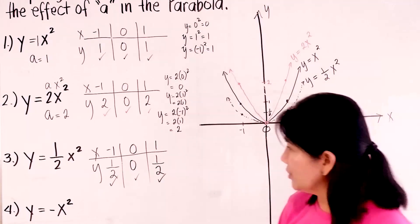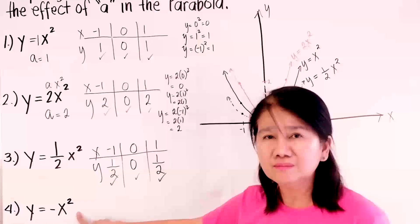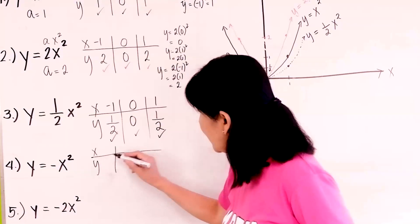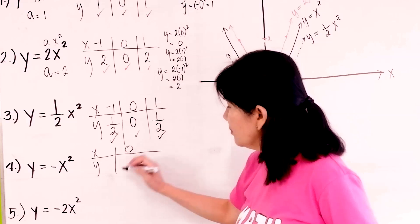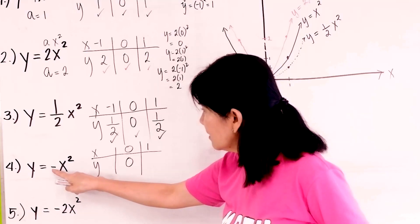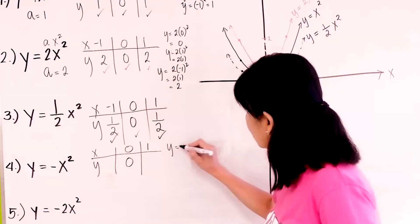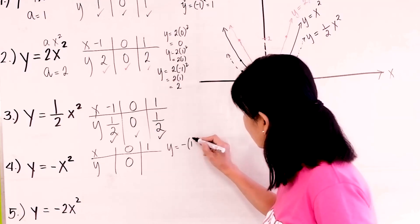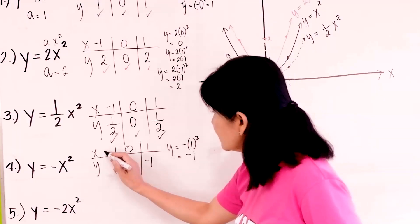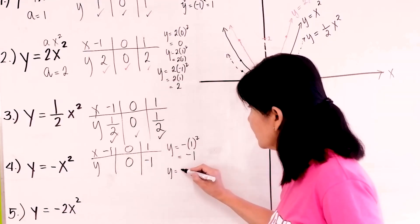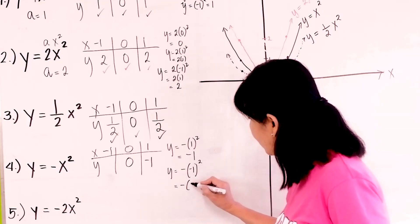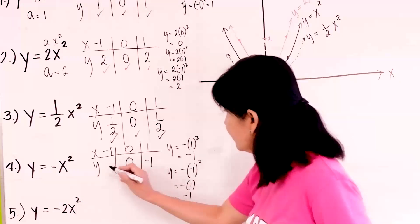Let's continue with the fourth example so that you will really see the effect of A. When x is 0, negative 0 squared is still 0. When x is 1, y equals negative 1 squared, you get negative 1. When x is negative 1, y equals negative 1 squared, that is still negative 1.